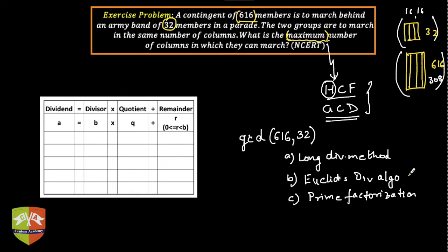Let's start and find the GCD. I'll be adopting Euclid's Division Algorithm to find the HCF. So 616 will be written as a, the divisor b is 32, and q and r have to be found out. Now in such cases, how do I find out? How many times does 32 go into 616? You can do a quick calculation.